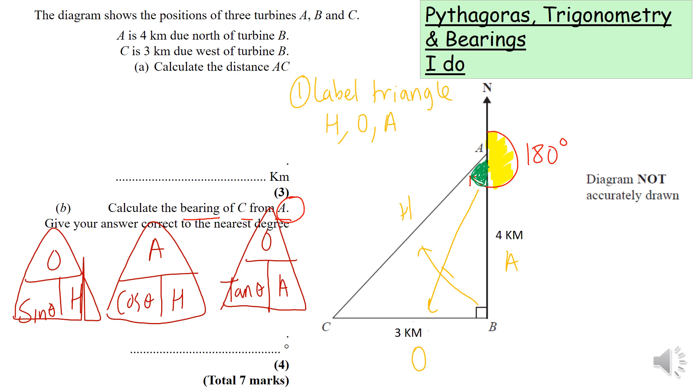Step two: cross off what's been given a value. In this case, what's been given a value? We can see the opposite has a value and the adjacent also has a value, so cross those two letters off.